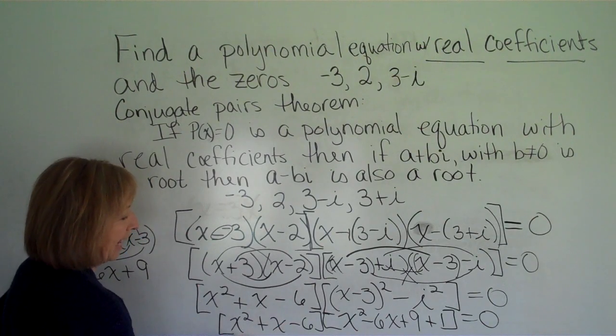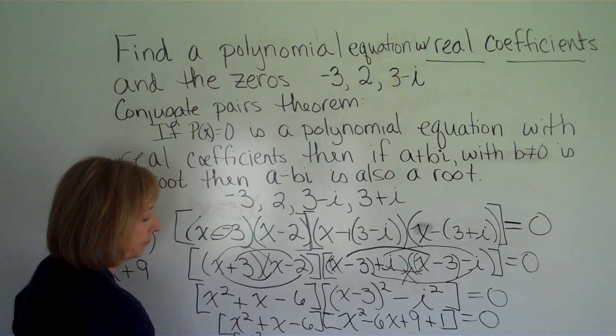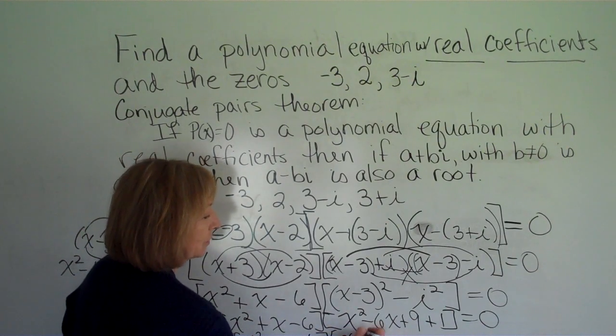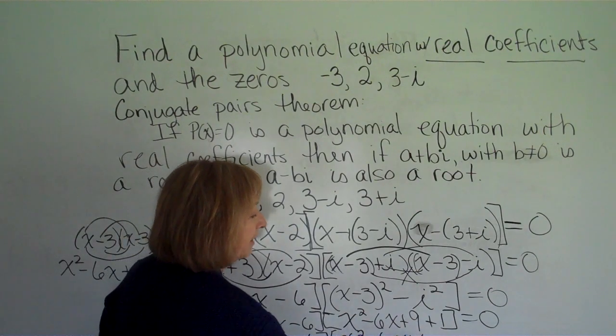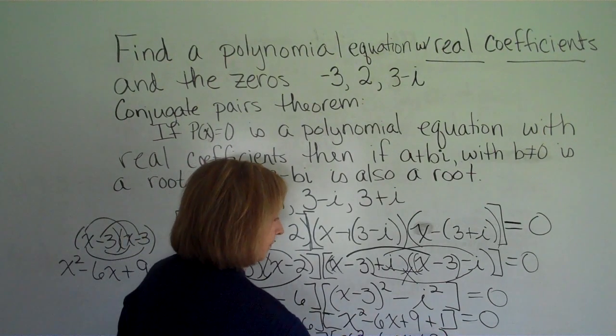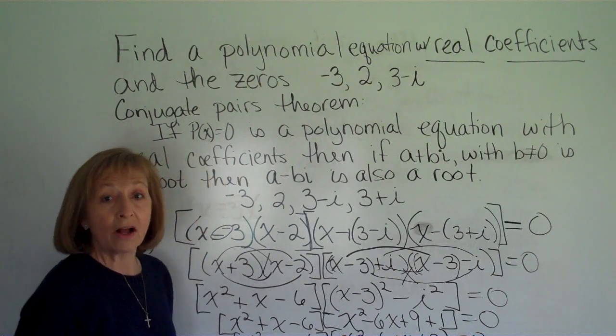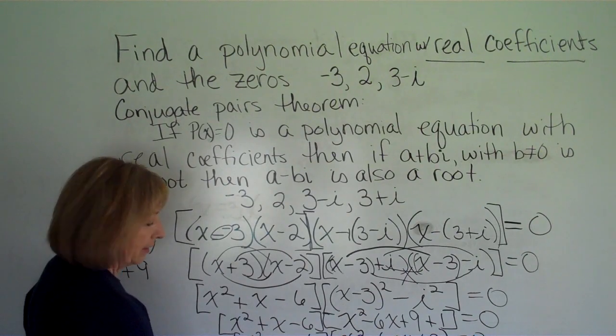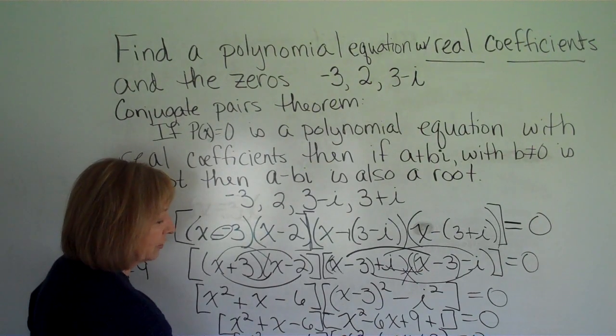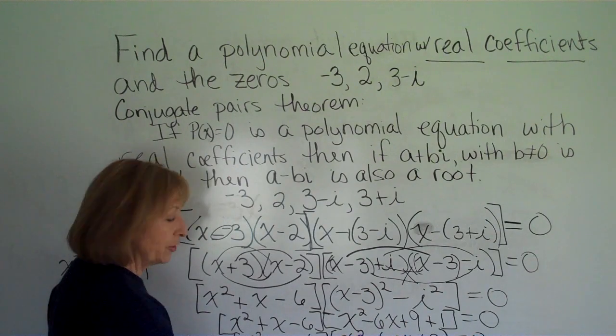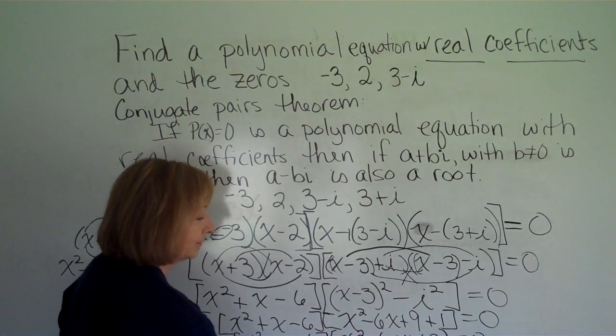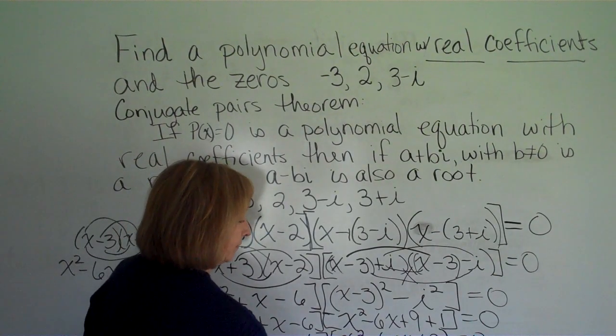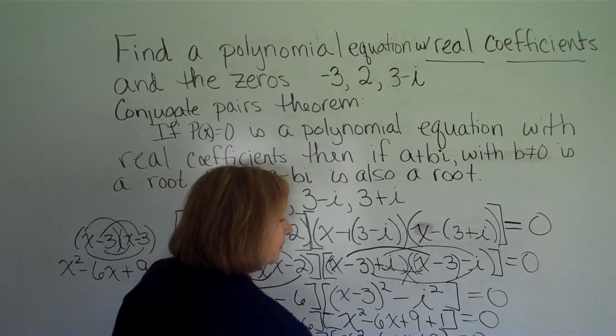So now we're looking at multiplying our x squared plus x minus 6 to x squared minus 6x plus 10. And when you multiply all of those out, and you combine your like terms, you get x to the fourth minus 5x cubed minus 2x squared plus 46x and then minus 60 equals 0.